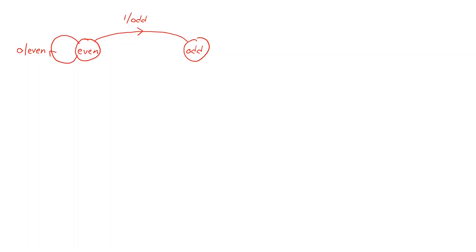Now we move to the odd state and go through all possible inputs in that state. If we get a zero as input we stay in the odd state, and we still have an odd number of ones. If we instead get a one as input, we transition to the state called even, and we will then have an even number of ones in total.